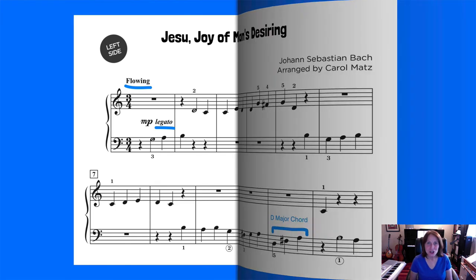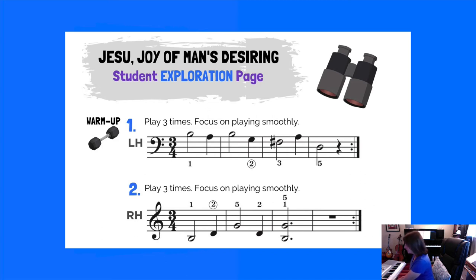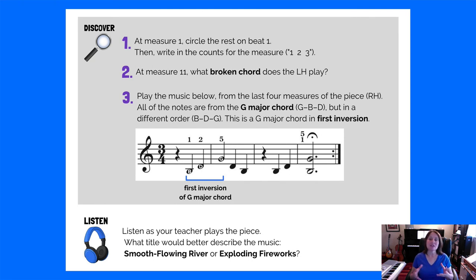So what I like to do is play that for the student so they can see what this long legato phrase is all about. Looking at the warm-up exercises from the student exploration page: play three times, focus on playing smoothly. This takes a challenge spot in the piece where the student's left hand shifts down — we isolate that so the second finger moves down to the G. The second warm-up — play three times, focus on playing smoothly — covers B D G, ending on that sixth from the end of the piece.